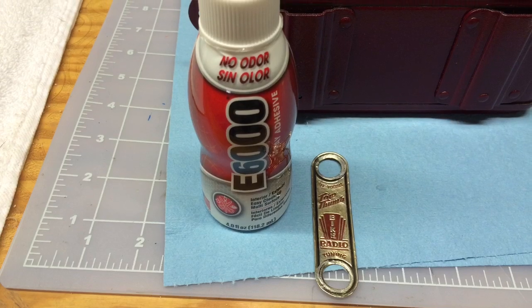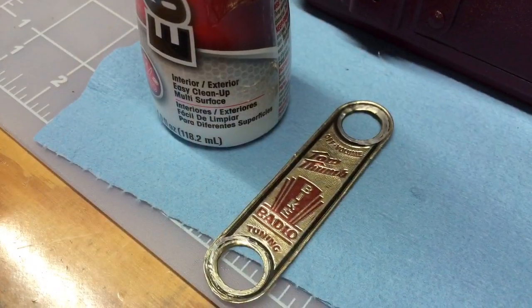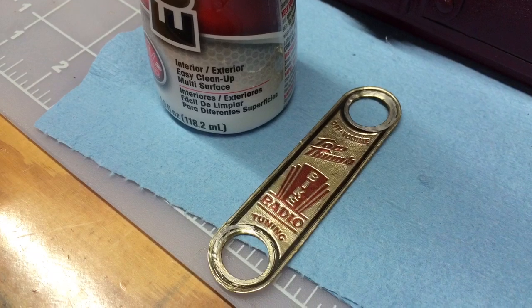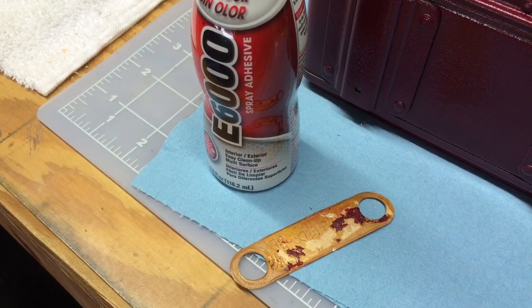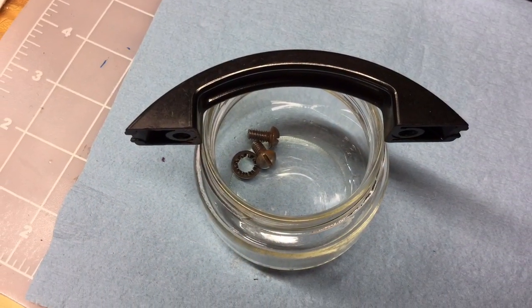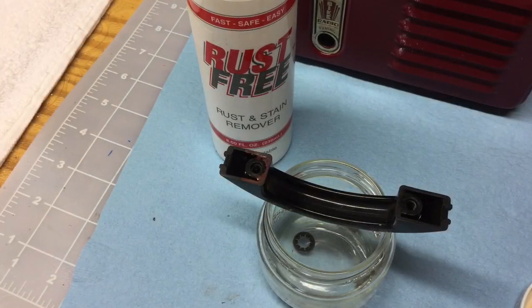Next up is getting the medallion back on the radio itself, on the radio cabinet. And again I'm using some spray-on adhesive on the back side of the medallion. And I'll let that set up for a few minutes, start to get tacky, and then apply it back to the old cabinet that I refinished with the wrinkle paint.